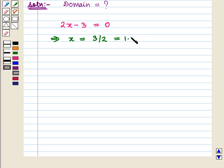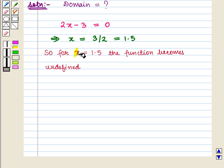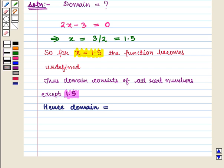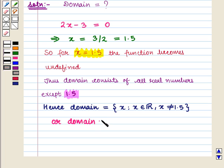That is equal to 1.5. So for x equal to 1.5, the function becomes undefined. Hence, this point should be excluded from the domain. Thus, the domain consists of all real numbers except 1.5. The domain is given by the set of all x where x belongs to the set of real numbers and x is not equal to 1.5. Or, we can also write it as the open interval from minus infinity to 1.5 union the open interval from 1.5 to infinity.